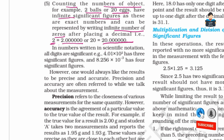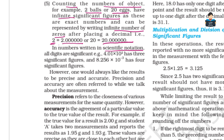In numbers written in scientific notation, all digits are significant. For example, 4.01 × 10² has 3 significant figures, and 8.256 × 10⁻³ has 4 significant figures: 1, 2, 3, 4.